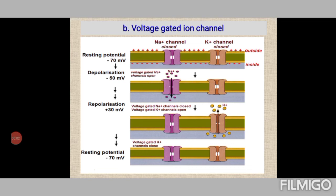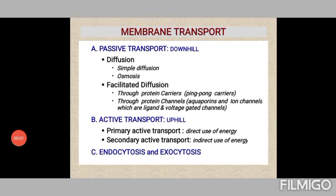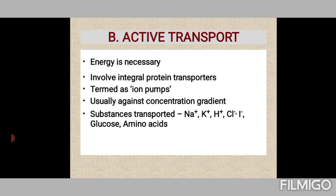Voltage-gated ion channels are typically seen during transmission of nerve impulses. The change in membrane potential — the voltage difference — switches the ion channels open or closed. Voltage-gated sodium and potassium channels are the most common, occurring in nerve cells. At resting potential (−70 mV), both sodium and potassium channels remain closed. During depolarization at around −45 to −50 mV, sodium channels open while potassium channels remain closed. At around +30 mV, sodium channels close and potassium channels open.